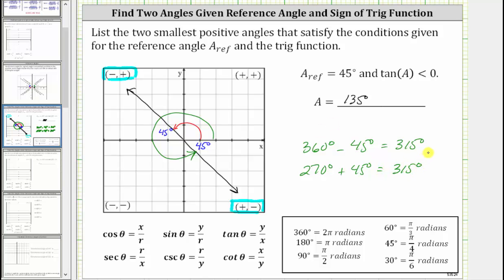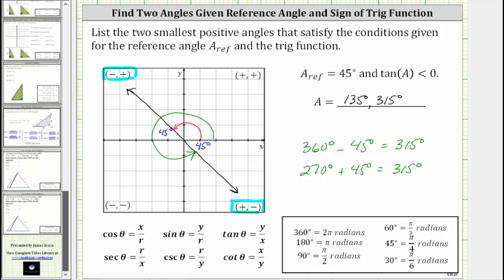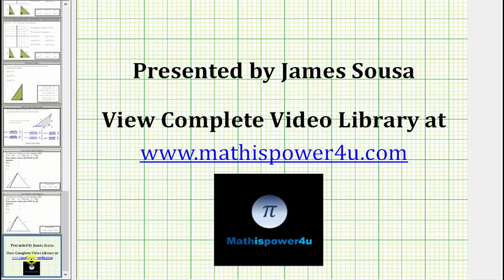315 degrees is the second smallest positive angle that satisfies the two conditions. I hope you found this helpful. See you next time.